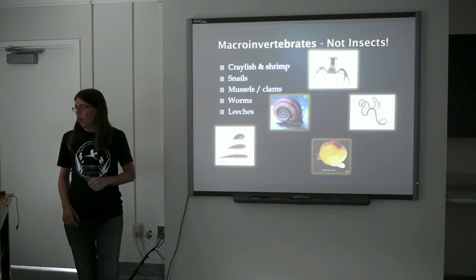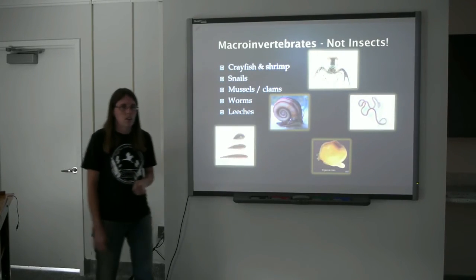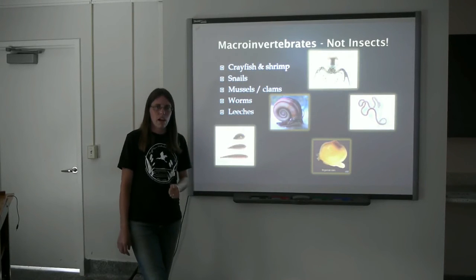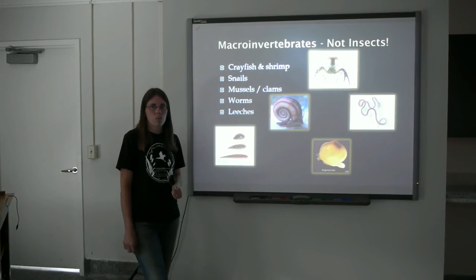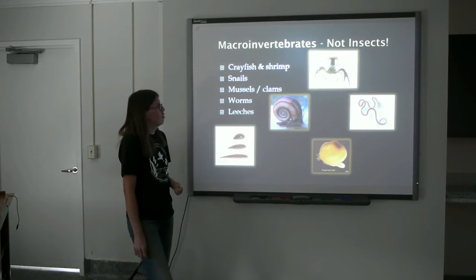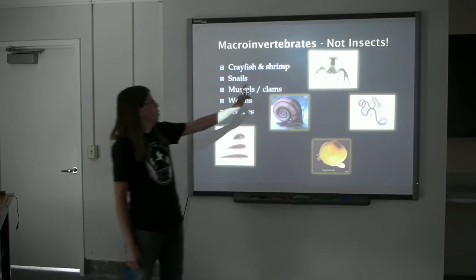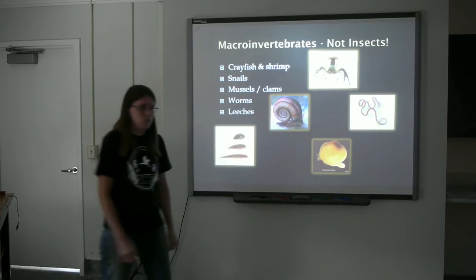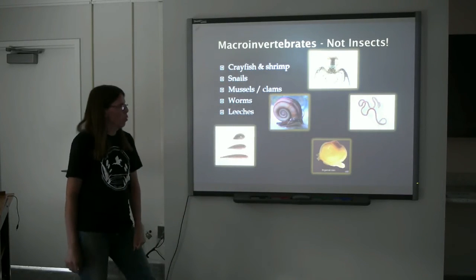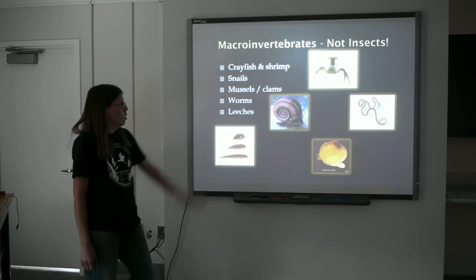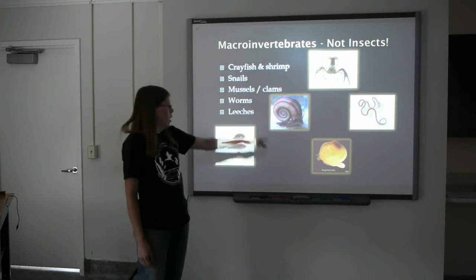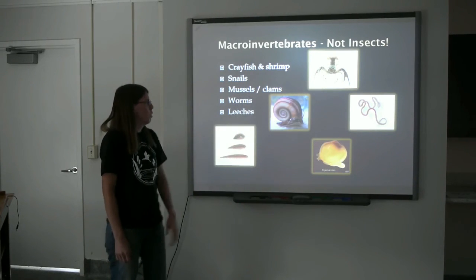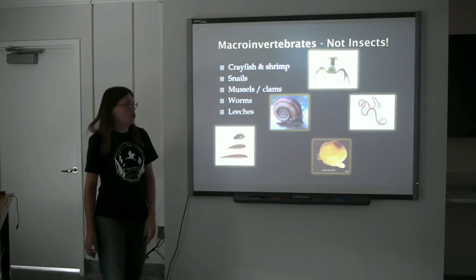Not all the macroinvertebrates that we look at are insects. Here are some of the very common macroinvertebrates that are not insects. Most people are familiar with the crayfish. There's also some very small freshwater shrimp, assorted snails, mussels, leeches, and an assortment of aquatic worms.